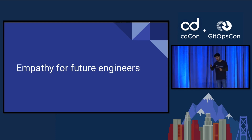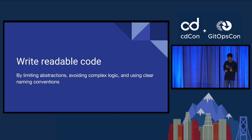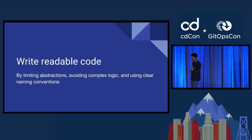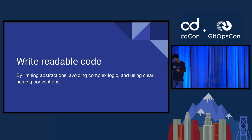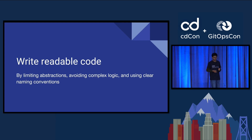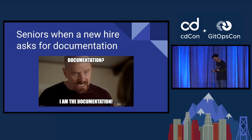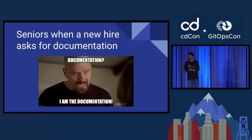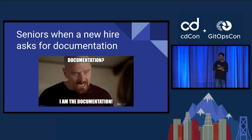When someone has just joined your team, one of the best things you can do is have readable code — by limiting abstractions, avoiding complex logic, and using good naming conventions. This reminds me of a funny incident: I was interning at a startup in India and they gave me a pipeline project. I asked for documentation, and the senior engineer said "I am the documentation." I felt guilty taking so much of their time. But if you find yourself in a place where there's a lack of documentation, you should help future people and write good documentation.